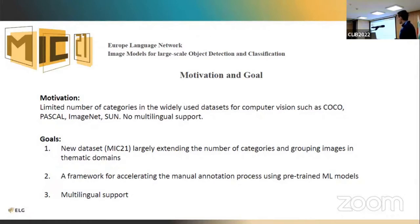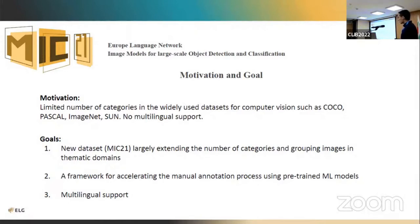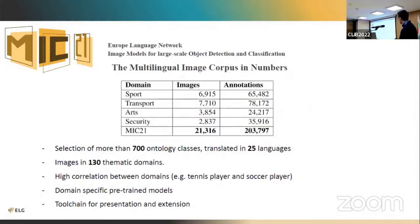We also want to accelerate data collection: one main problem in machine learning is how we collect and organize images. We developed a framework and toolchain which helps with this by using actual machine learning models to generate a set of proposals for downloaded image sets, so the human operator checking these proposals has less work to do. The third goal is to have multilingual support for the categories we want to classify.